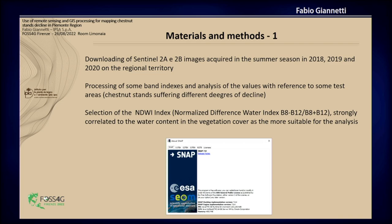We processed some classical band indices, and we analyzed the value of these indices with reference to some test areas in which, through direct surveys on the ground, we know that chestnut stands are suffering different degrees of decline. After some analysis on this data, we selected the NDWI — the Normalized Difference Water Index — making use of B8 and B12 bands of Sentinel, which, as well-known in literature, is strongly correlated to the water content of the vegetation cover. That proved to be the most suitable for our analysis.